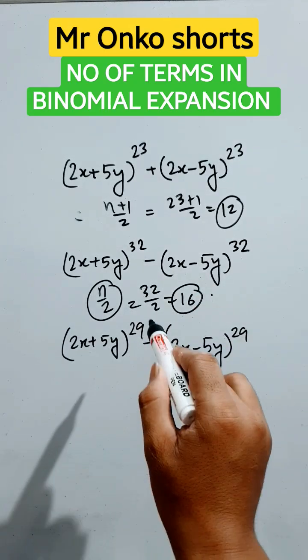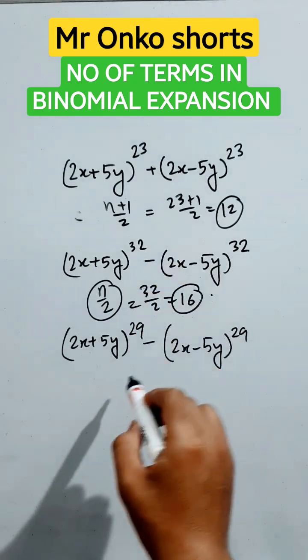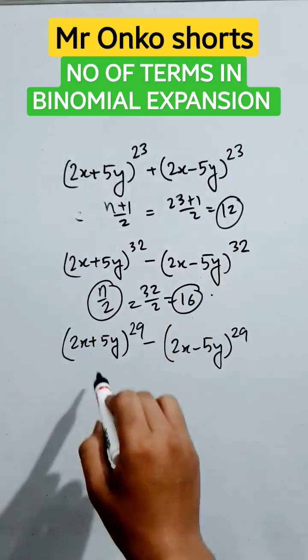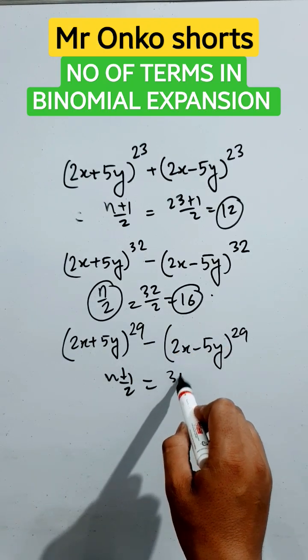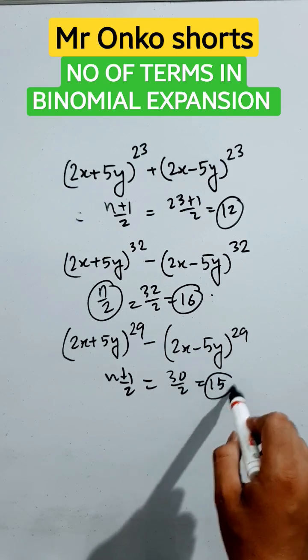In this case, it is minus in between them and odd powers. So this case will also have n plus 1 by 2 terms, that is 29 plus 1 by 2, that is 30 by 2, 15 terms are there.